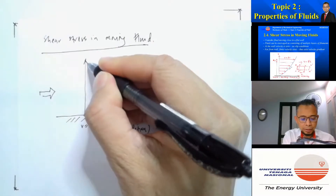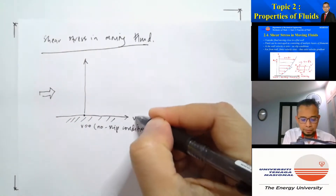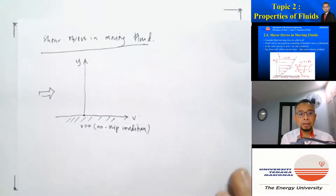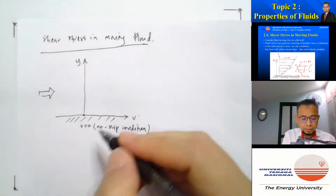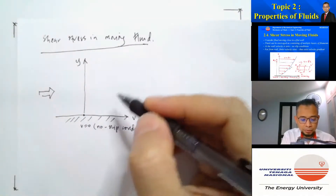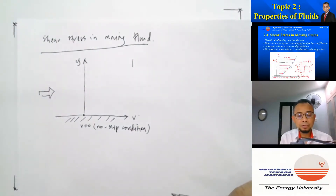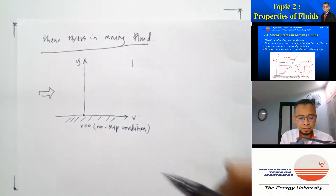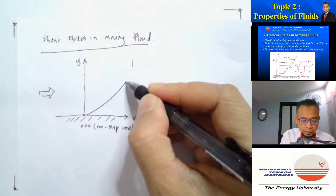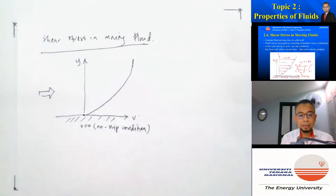So if I draw a graph of velocity against y, so at the wall itself the velocity will be zero, whereas away from the wall it will have some value of finite velocity. So there will be a velocity gradient like that.